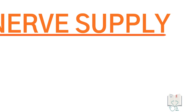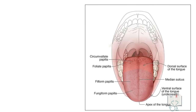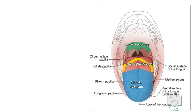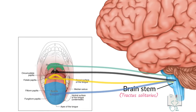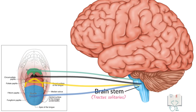Regarding nerve supply, taste reception for fungiform papillae in the anterior two-thirds of the tongue is carried out by the chorda tympani branch of the facial nerve. The circumvallate and foliate papillae are innervated by the glossopharyngeal nerve. Taste buds in the soft palate are innervated by the greater petrosal branch of the facial nerve, and those in the pharynx and epiglottis by the vagus nerve. All fibers from these nerves converge in the tractus solitarius in the brainstem.